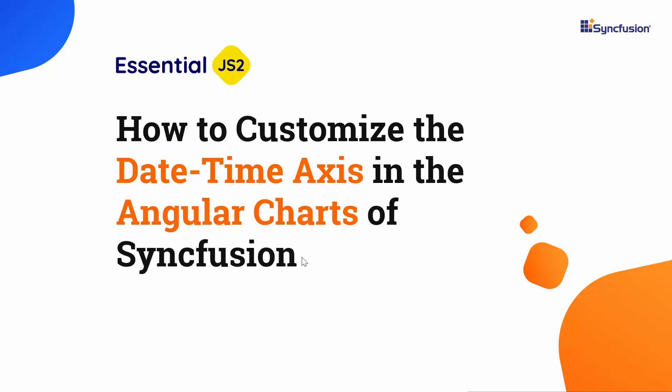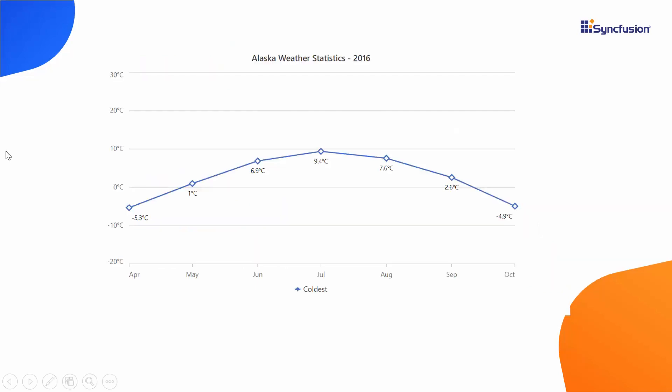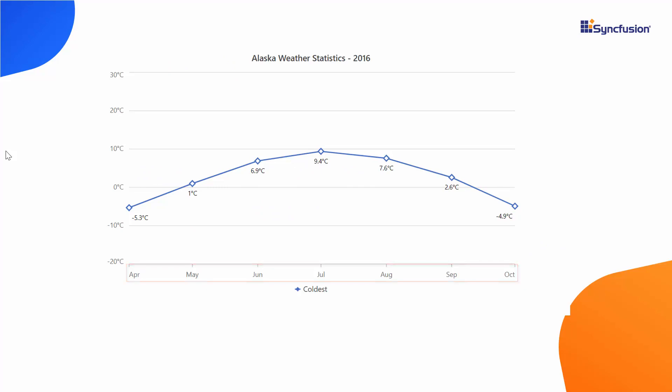Hi everyone, welcome back. Having discussed how to customize the Syncfusion Angular charts with different chart axis types like category, numeric, and logarithmic axis in my previous videos, now in this video I will show you how to display the date time labels at the horizontal axis instead of numeric intervals, along with its other customizable options. I may need to make use of the date time axis to achieve this, so before looking onto it, let me show you a simple example.